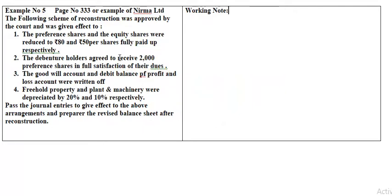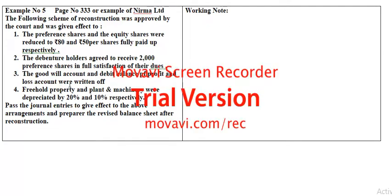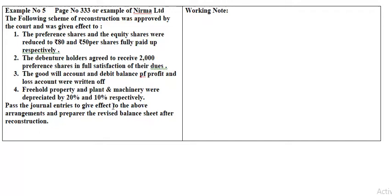The goodwill amount and the debit balance of the profit and loss account should be written off. Old property and plant and machinery are to be depreciated by 20% and 10% respectively. Pass the journal entries to give effect to the above arrangements and prepare the revised balance sheet after reconstruction.